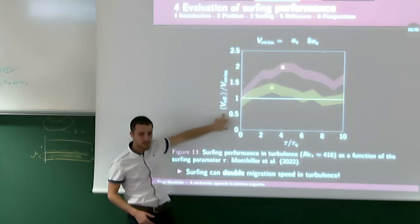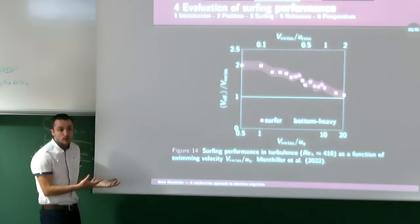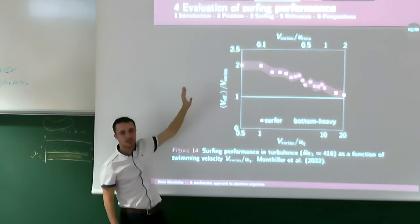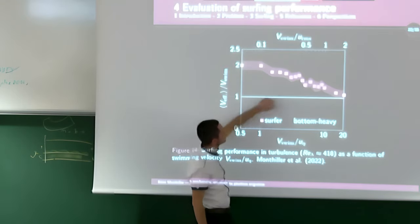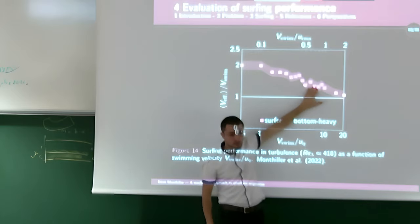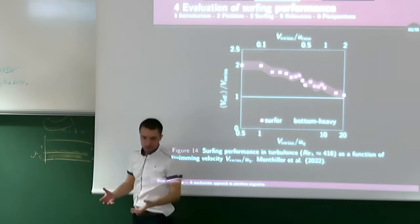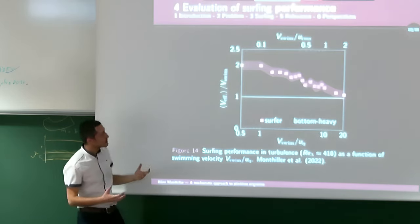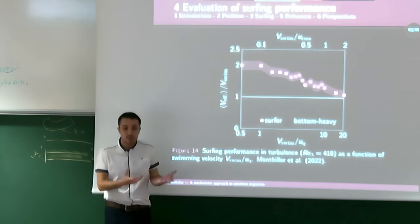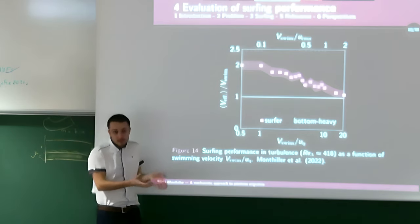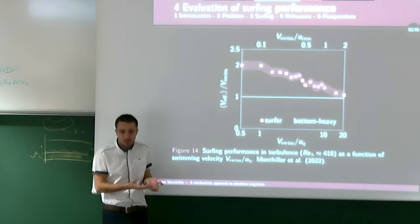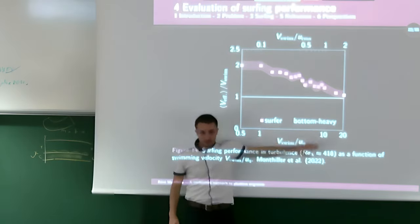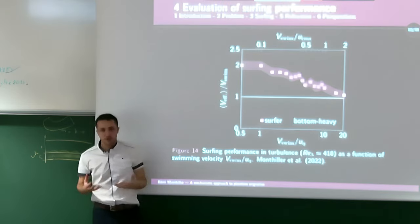To characterize surfing performance as a function of swimming velocity, we extract the maximum performance for each swimming velocity. At low swimming velocities, surfing achieves a performance of 2 — doubling migration speed. As swimming velocity increases, performance slowly decreases toward 1, because even if we exploit the flow, the benefit is marginal compared to our own fast swimming velocity. Bottom-heavy swimmers, by contrast, always achieve performance of 1 regardless of swimming speed, as turbulence only adds noise.